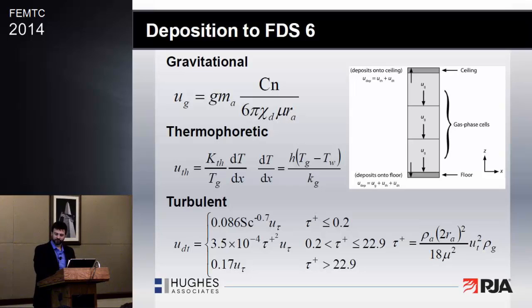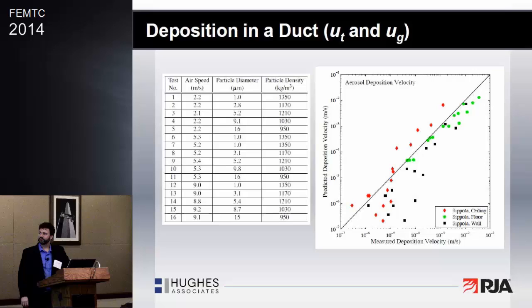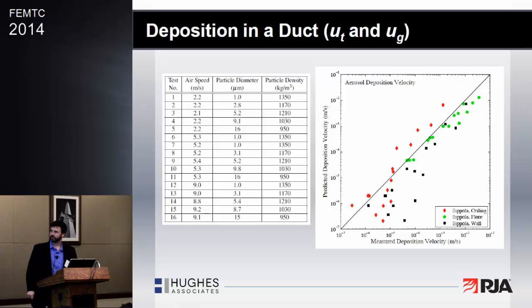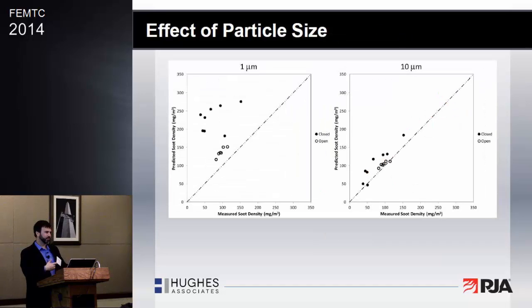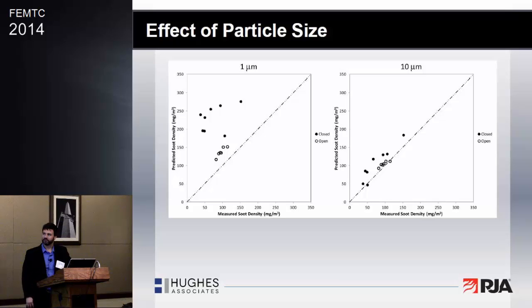We added this to FDS, and then did some validation. This is work done by Chris Overholt. In a simple duct test, they generated monodispersed particles, flowed them through the duct, and measured deposition on removable panels. We see floor, ceiling, and walls — ceiling in red, floor in green, walls in black — with predicted deposition on the vertical axis and measured deposition on the horizontal axis. There's relatively good agreement. This accounts for turbulent and gravitational mechanisms; these are isothermal flows so there's no thermophoretic component. We appear to have coded the equations correctly based on this simple test.